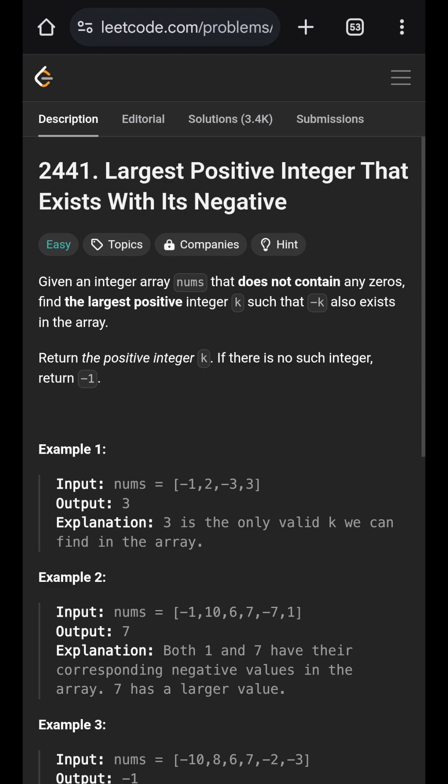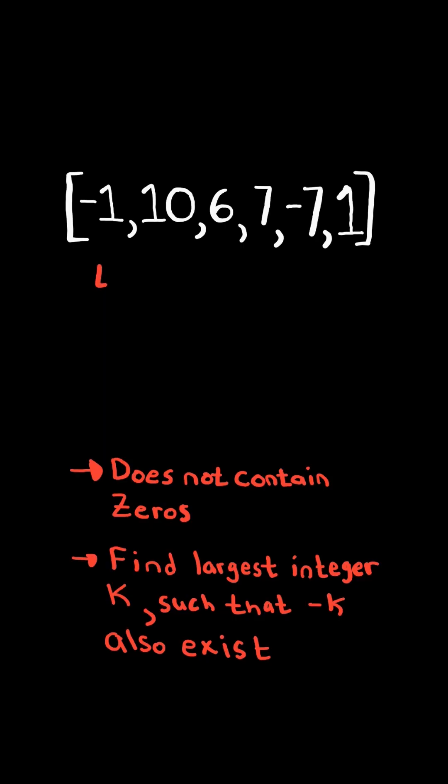Find the largest positive integer that exists with its negative. Find the largest integer k such that negative k also exists.